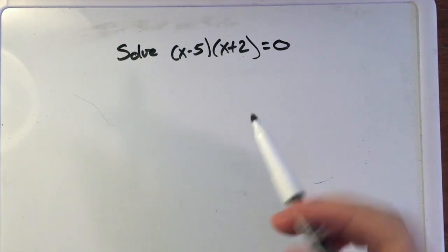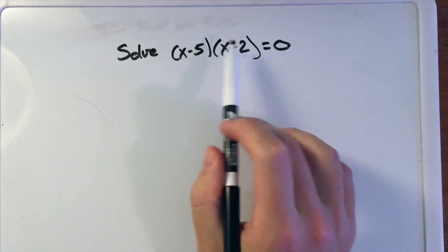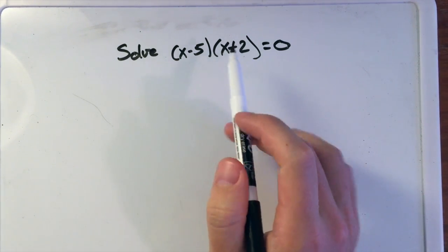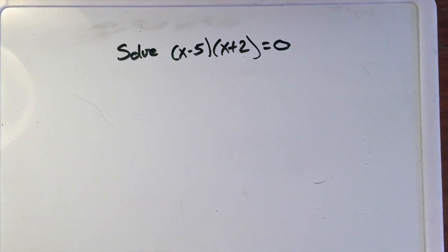In this video, we're going to solve the equation (x-5)(x+2)=0. When we see two parentheses next to each other, we know that there's multiplication going on between them.